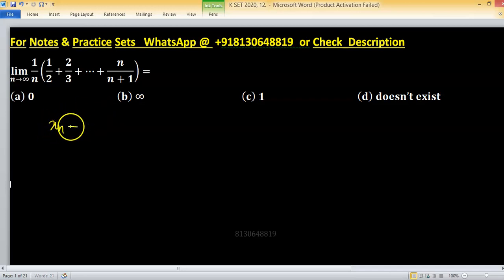This theorem says if limit of xn is l, then limit of its average x1 plus and so on up to xn divided by n is also l. But converse of this theorem is not true.